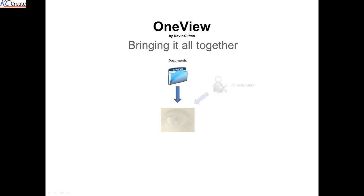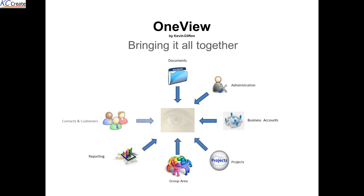The key areas identified were document management. There's information relating to accounts, projects, and all of the different groups that you're actually involved in. There's a lot of information which is duplicated, and a lot of information which can be used better between the groups. Looking at reporting, contacts, external contacts and customers' information, which was needed on a regular basis — a way of storing that in a more productive way.